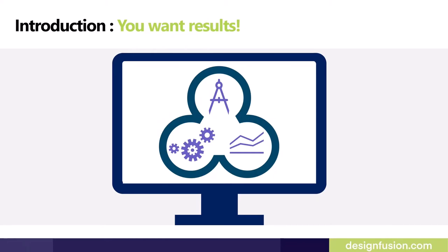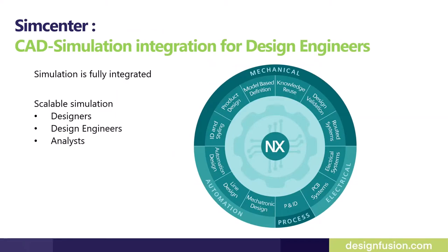You are looking for a simulation tool that can help you solve most of your engineering problems, and you also want to move effortlessly between the simulation environment and the CAD environment so you can get your results faster and finalize your product earlier than your competitors. For that, Siemens has a solution — and it is SimCenter. SimCenter is a fully integrated and multidisciplinary simulation tool that can be easily embedded with NX and any other CAD system available in the market, so designers can effortlessly move between CAD and simulation environments to get results faster.